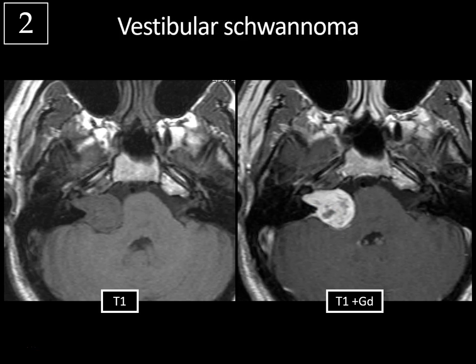This is also known as an acoustic neuroma. It's a benign tumor of Schwann cells arising from the vestibulocochlear nerve, which lives in the internal auditory canal, and it represents about 80% of CP angle masses. These patients usually present with sensorineural hearing loss, and may also have tinnitus and headache. The typical imaging appearance looks like ice cream on a cone. It tends to form an acute angle with the adjacent dura, and it typically widens the porous acousticus, which is the medial portion of the internal auditory canal.